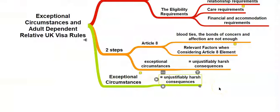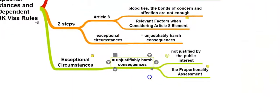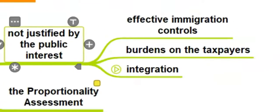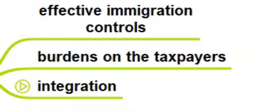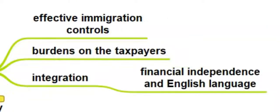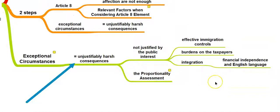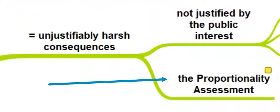It is important to understand the term 'unjustifiably harsh consequences' and to analyze the proportionality assessment. According to the Home Office, unjustifiably harsh consequences involve a harsh outcome for the applicant or their family member which is not justified by the public interest. This includes in particular the public interest in maintaining effective immigration controls, preventing burdens on taxpayers, and promoting integration through migrants — usually achieved by being financially independent and able to speak English. If you can prove unjustifiably harsh consequences, the decision maker will then need to consider whether or not the refusal will be proportionate.